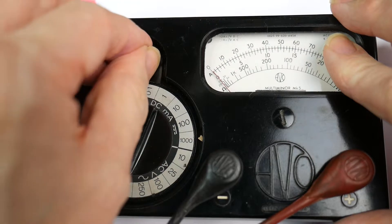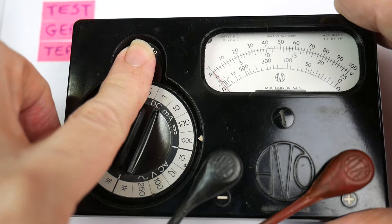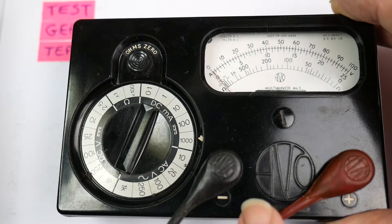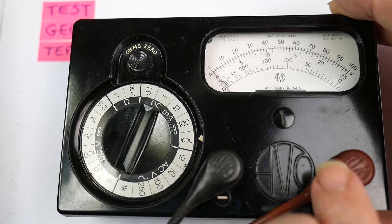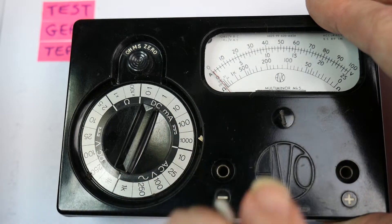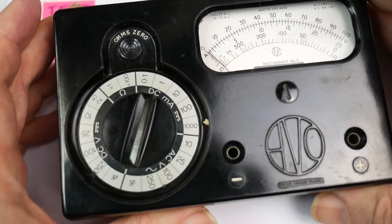There's an ohms zero knob in the usual way so you can compensate for the battery being a bit low. Hasn't by the looks of it got a cutout which the big Evo Model 8 has, but it kind of looks a bit like the Evo Model 8 in the same sort of style.